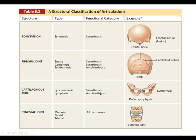We now have two examples of amphiarthrosis: one is a fibrous joint (syndesmosis) and the other is a cartilaginous joint (symphysis). Whether it's amphiarthrosis or synarthrosis is determined by the mobility of that joint, not what separates the bones. Synovial joints are mainly diarthrosis — freely mobile — though there are rare exceptions where mobility is fairly limited.